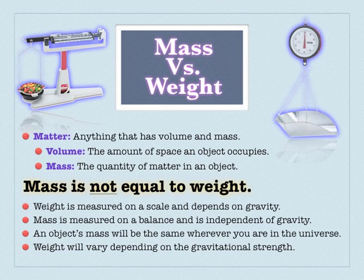Mass is measured on a balance, sort of like a seesaw. If you were on a seesaw and put a pile of rocks on the other side and it balanced out, if you took that whole setup to the moon, it would work the same. But weight is measured on a scale, and that deals with a downward force and the interaction between you and the planet. If you move that scale, that interaction will be less or more depending on how the gravity changes.